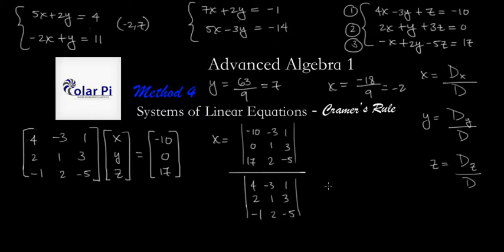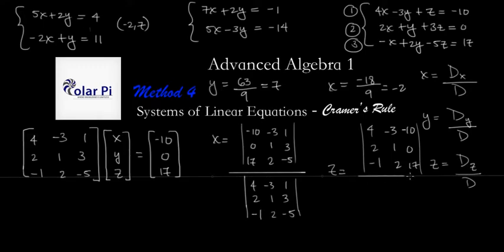For z, it'd be just replace the z coefficients with these constants. So 4, 2, negative 1, negative 3, 1, 2, and then the z coefficients replaced by negative 10, 0, 17, and then this divided by—sometimes you really get it wrong when you do it by hand—so there.